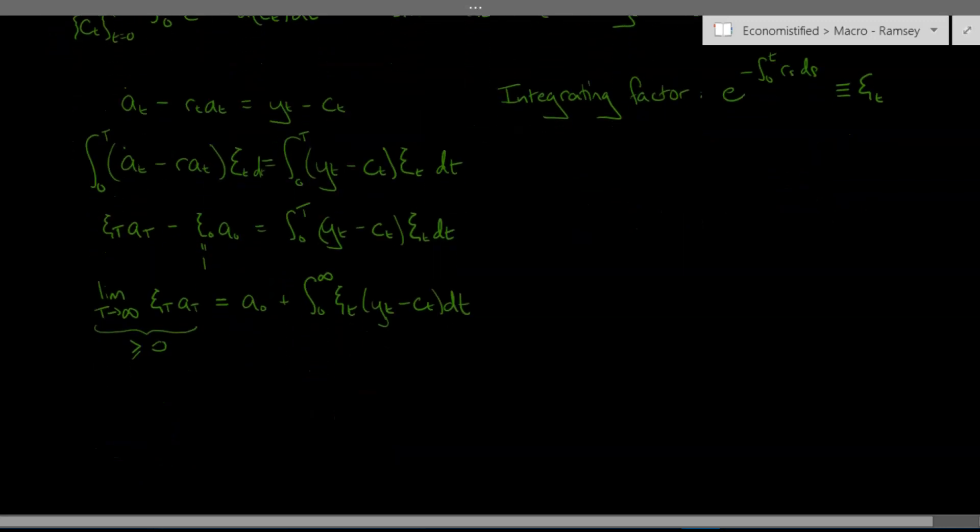Okay but for now let's just rearrange this budget constraint and leave it as an inequality and we're just going to rearrange it so that our present value of consumption from zero to infinity is less than or equal to the wealth plus present value of your income.